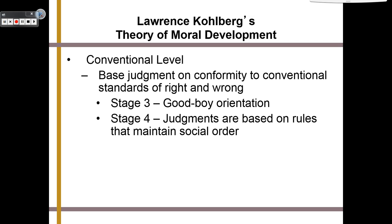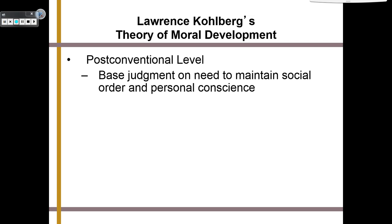At the post-conventional level, we base our judgment on the need to maintain social order and personal conscience — and this is the highest level. You base your judgment not on what might happen to you if you do something wrong, not on the rules or wanting people to like you, but because you believe this is the right thing to do. Your conscience tells you this is the right thing to do, that this is for the best of everyone, and therefore you believe it is the morally correct thing to do.